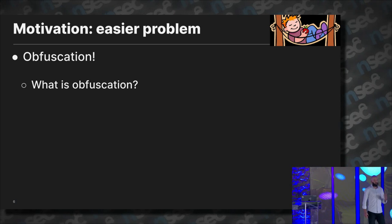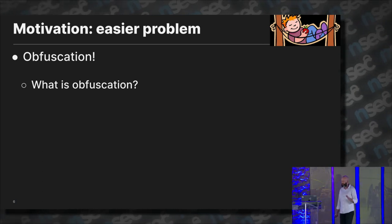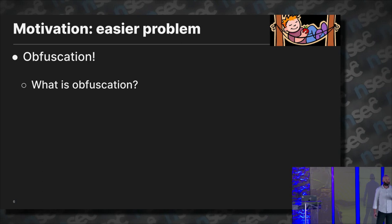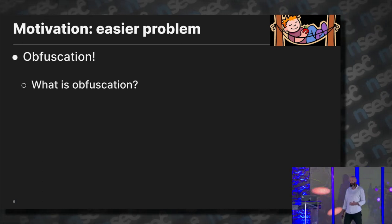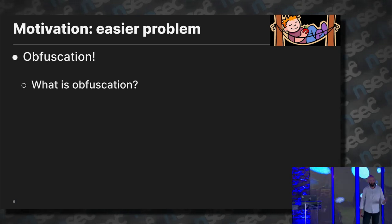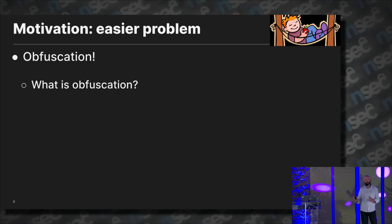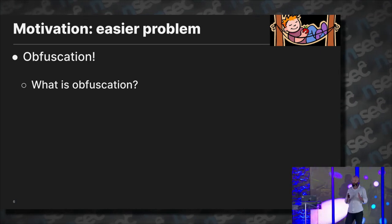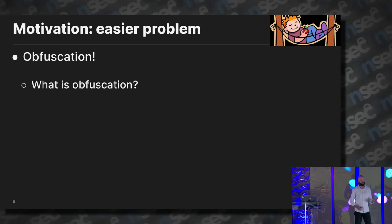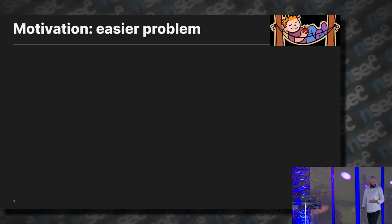When we see a difficult problem, what do we do? We search for an easier one. An easier related problem is obfuscation. For those who've never heard of it, obfuscation is interesting — its theoretical foundations go deep into computer science and computational complexity. But practically, it's a family of techniques that transform your code: they preserve the functionality but hide the inner structure in a way that people find very difficult to understand, making it almost unintelligible to humans.